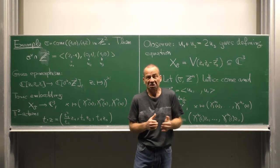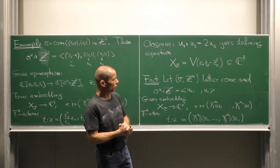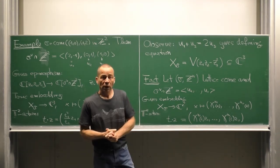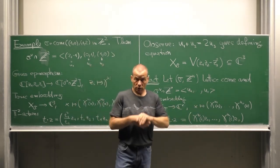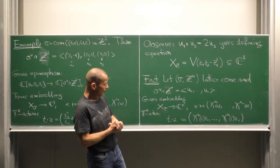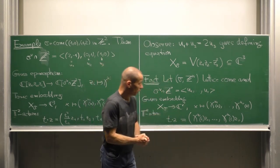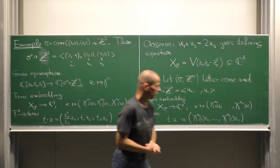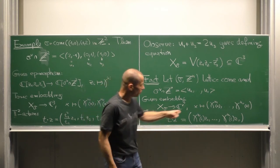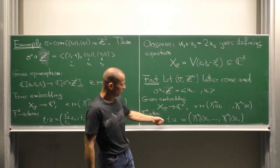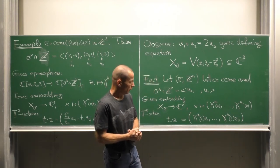What we have just done is a general recipe. Take any pointed lattice cone sigma in C^n. Suppose we know the generators u_1 up to u_r of the cone monoid. Then this gives us an embedding of X_sigma into C^r, just applying the r generators of the monoid algebra. And the torus action is via taking these as characters. So t times z is chi^u_1 of t, z_1 up to chi^u_r of t, z_r.